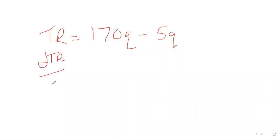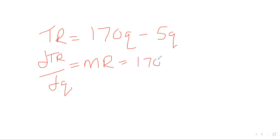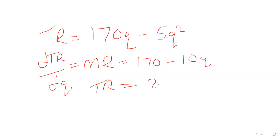So here this will be dTR/dQ. TR stands for total revenue. When differentiated, the name changes to marginal revenue. So we have 170Q giving 170, and minus 5Q squared giving minus 10Q. Now try this one: what is the derivative of 85Q minus 2.5Q squared?